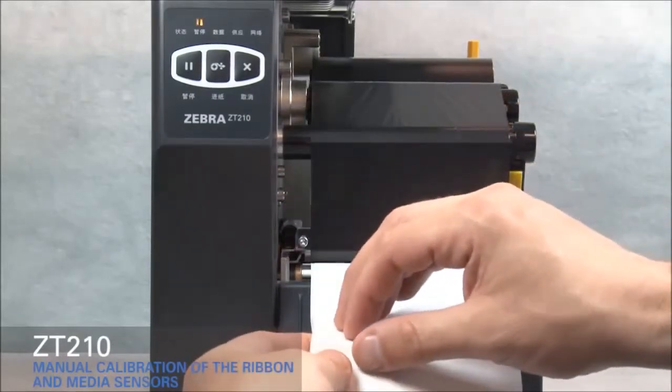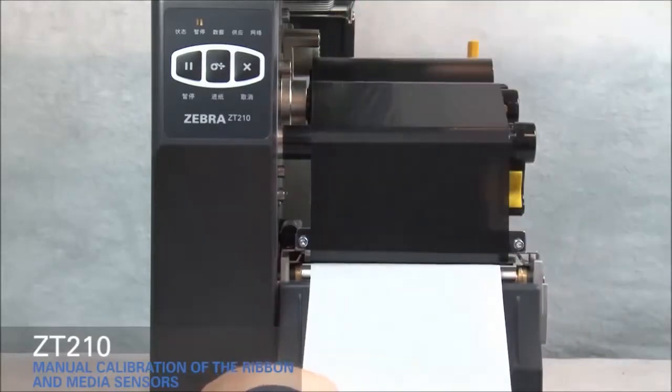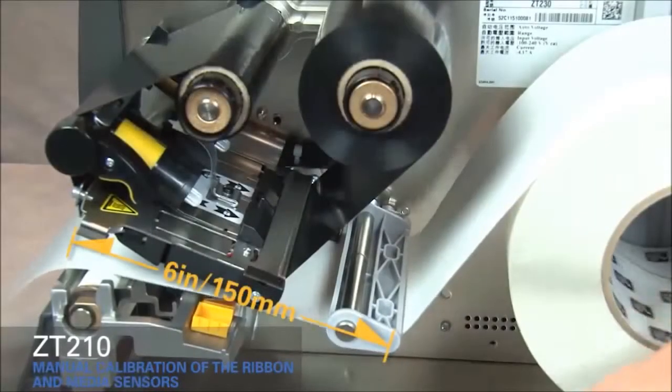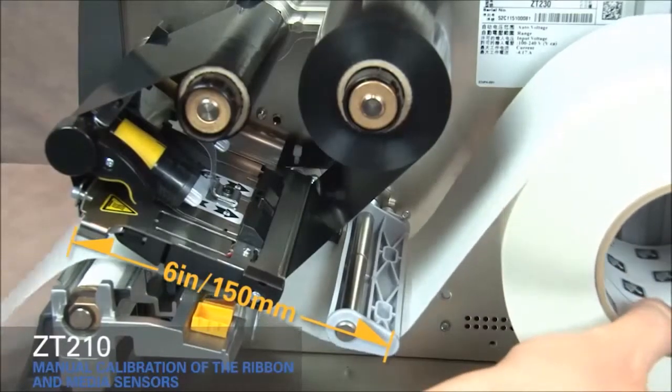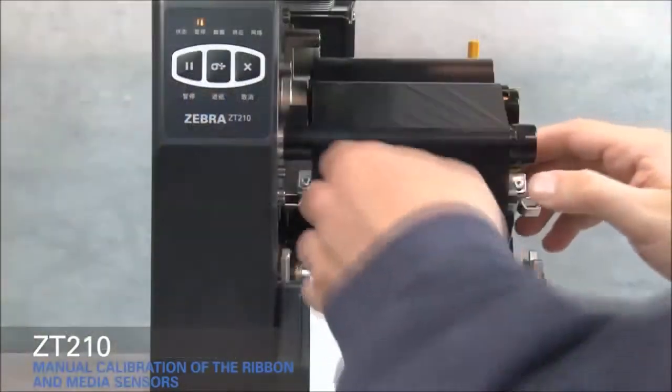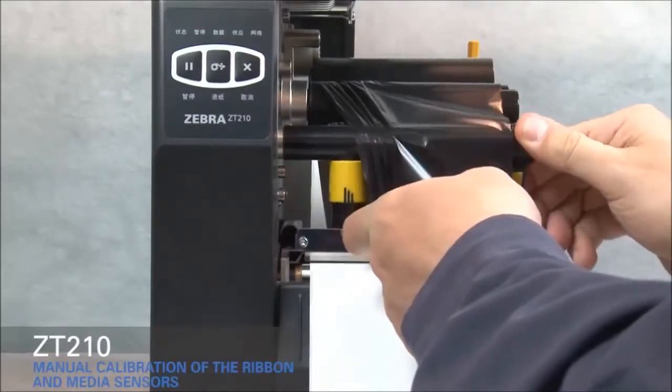Pull media out and remove about 6 inches or 150 millimeters of labels from the liner. Roll media back into the printer so that only the backing is between the media sensors. Move ribbon to the right away from the sensors. Close the printhead.